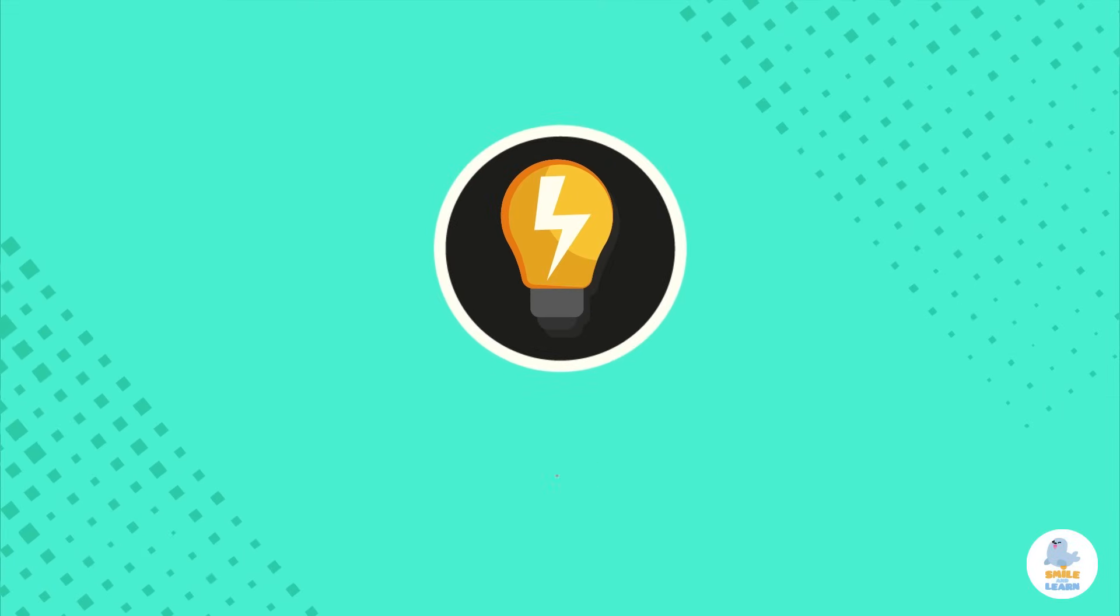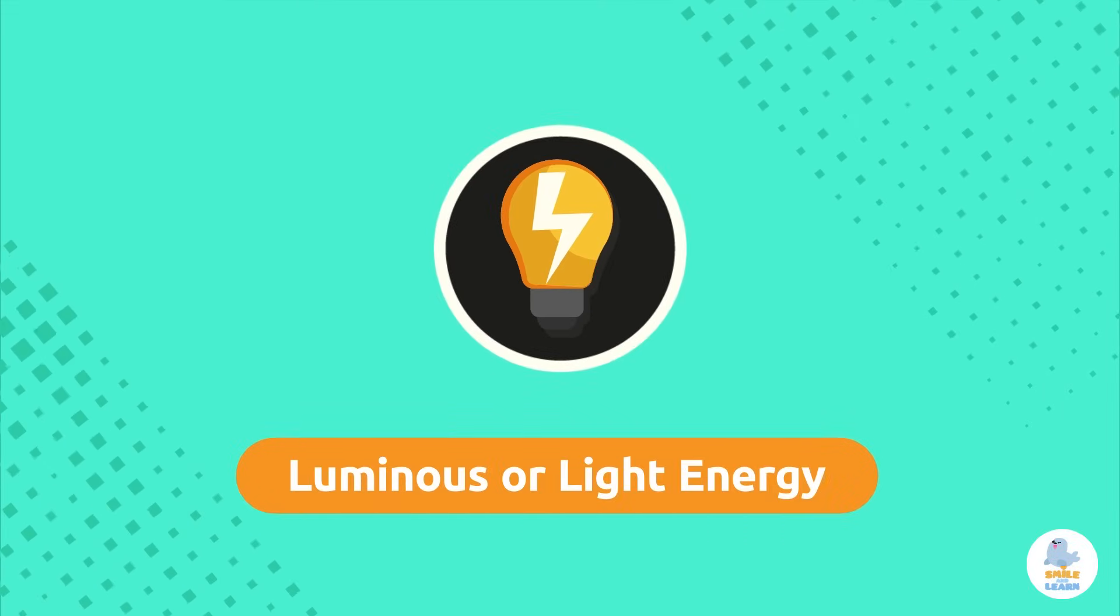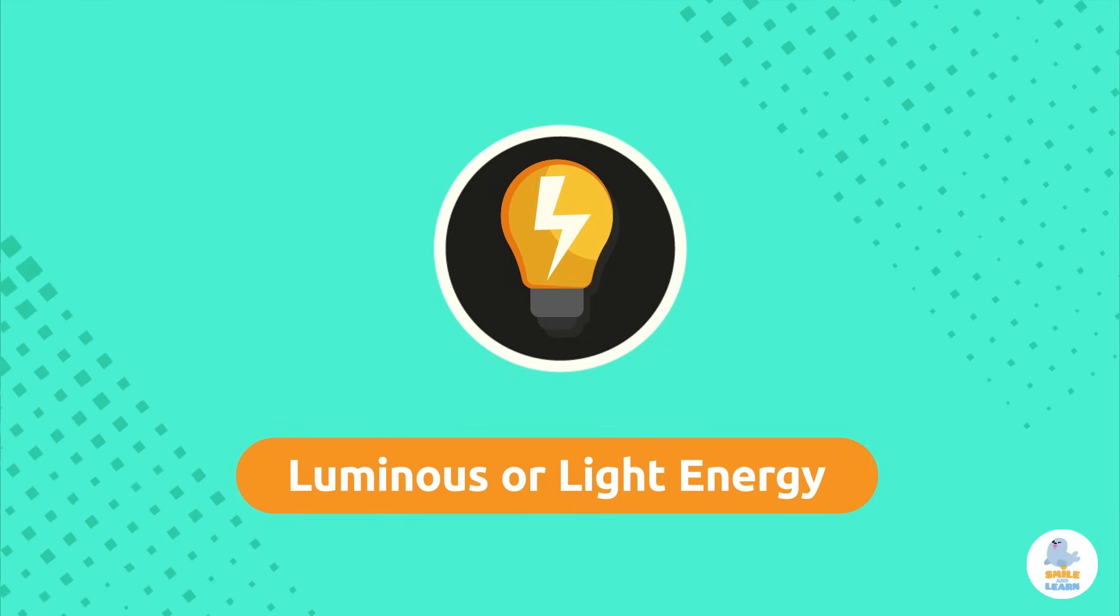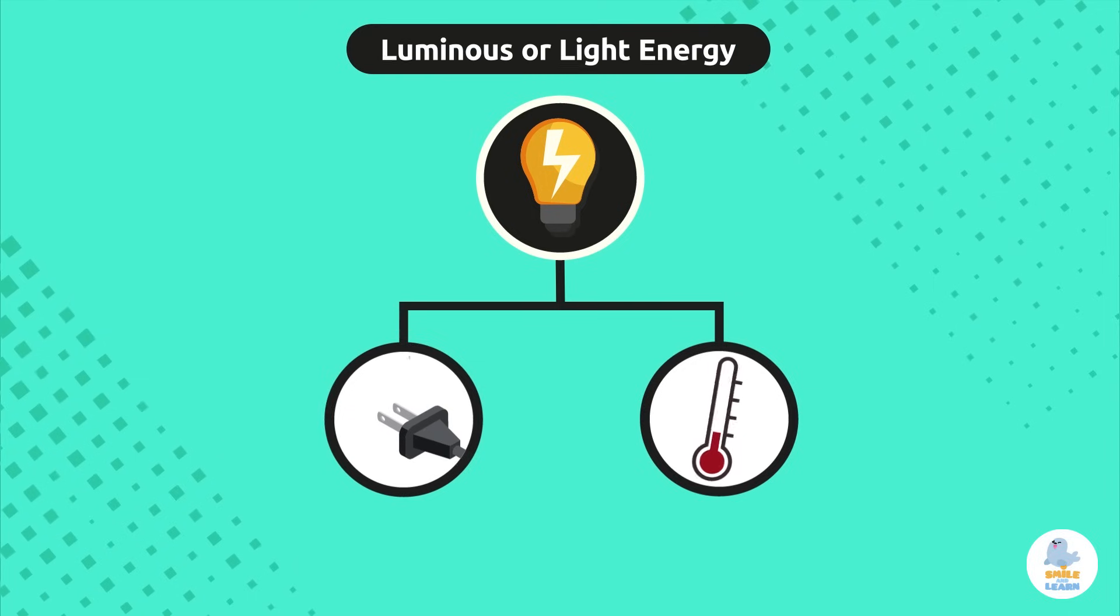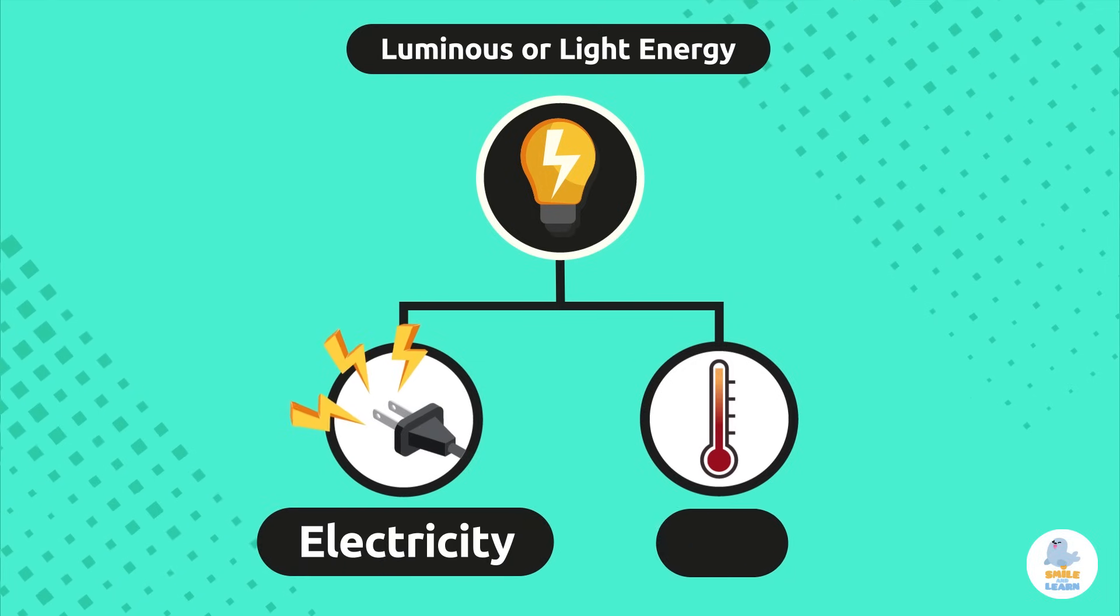As I said before, light is a form of energy and we call it luminous or light energy. Light energy can be transformed into other forms of energy such as electricity or heat.